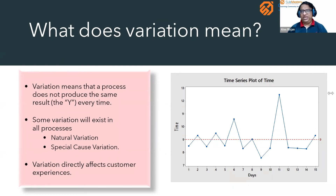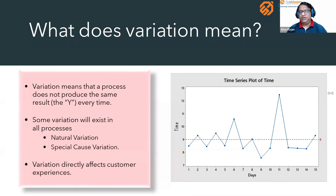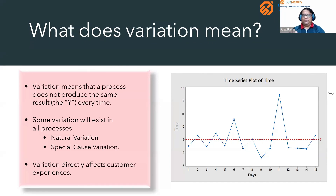So two types of variations exist in every process: natural variation, also called common cause variation, and special cause variation, also called assignable cause variation — where we can assign one reason. Special cause variations are not positive for the process; they result in defects and must be eliminated. In a Lean Six Sigma project, tools like run charts and control charts help us identify the presence of special cause variations so we can reduce them.